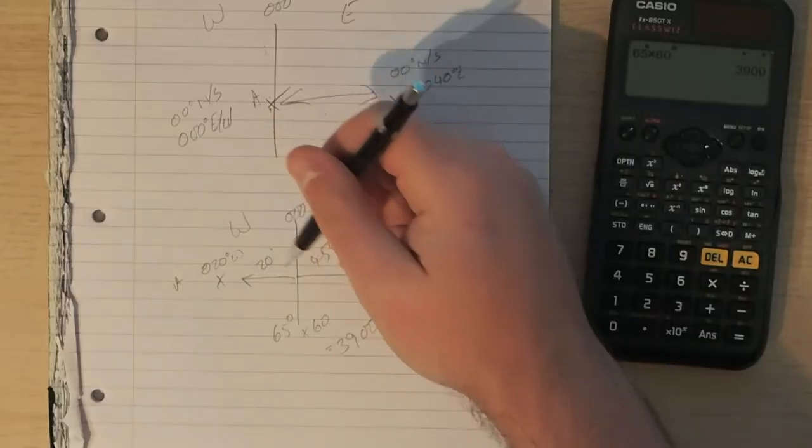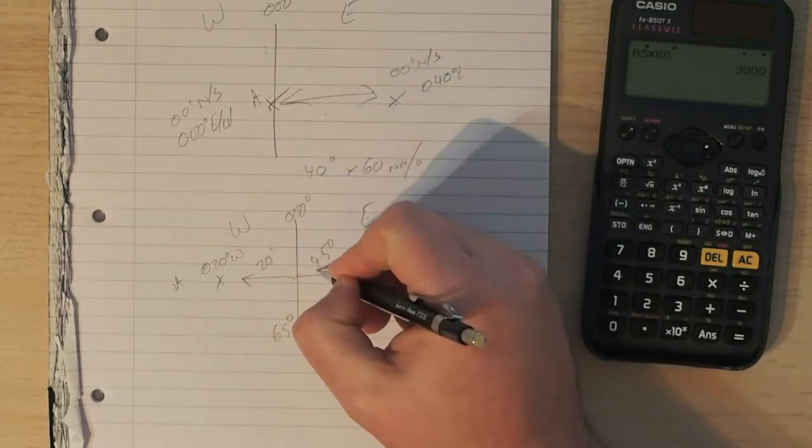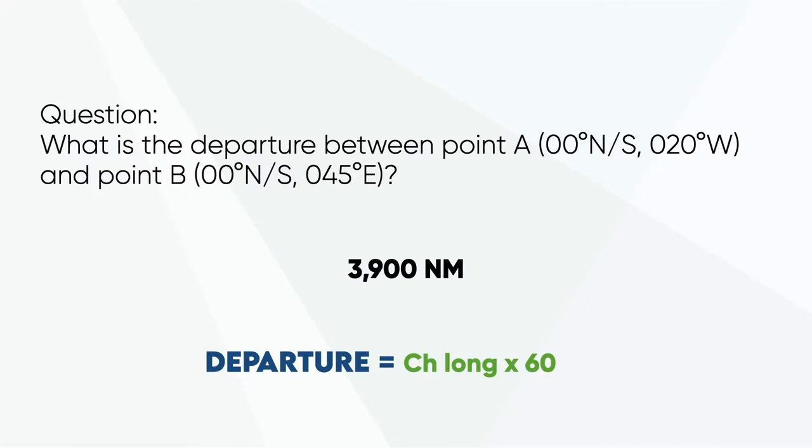That question isn't especially complicated, but it could be easy to get wrong if you're not clear on where east and west are relative to the Greenwich Meridian. If you had drawn both positions to the same side, you might have thought the change in longitude was only 25 degrees. Measure twice, answer once - always read the question carefully.